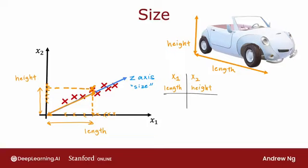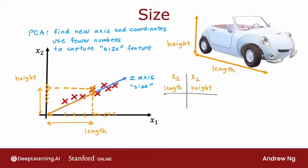So we'll formalize this in the next few videos. But the idea of PCA is to find one or more new axes, such as z, so that when you measure your data's coordinates on the new axes, you end up still with very useful information about the car. But maybe now instead of needing two numbers corresponding to the coordinates on x1 and x2 axes, the length and height, you now need fewer numbers, in this case, only one number instead of two to capture roughly the size of the car.